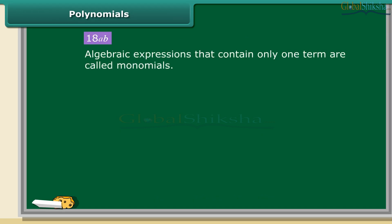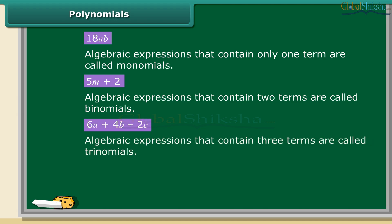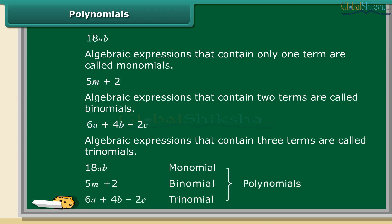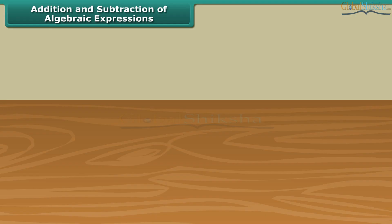Children, see this algebraic expression. It has only one term. This type of algebraic expression is called monomial. Now, is 5m + 2 a monomial? No, it has two terms. This type of algebraic expression is called binomial. The expression 6a + 4b - 2c is not a binomial because it has three terms, right? So, this type of algebraic expression is called trinomial. Remember, all algebraic expressions that have one or more than one terms are called polynomials. Therefore, monomials, binomials and trinomials are all polynomials.